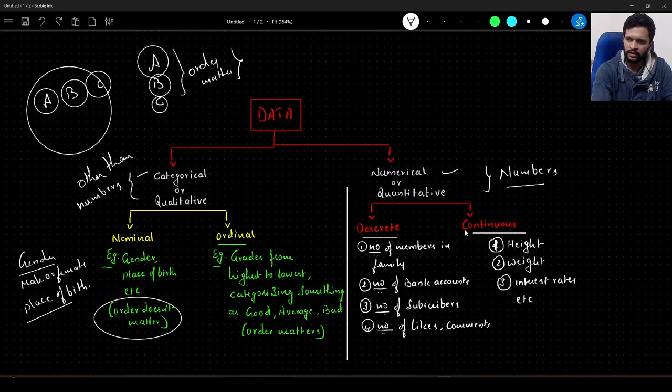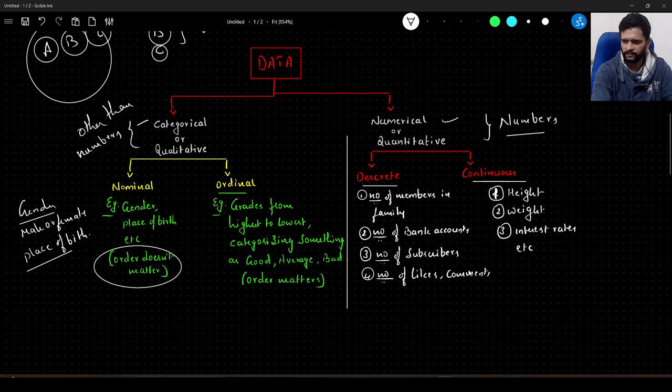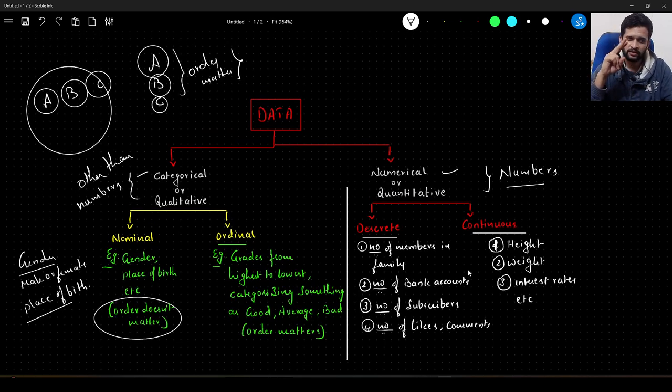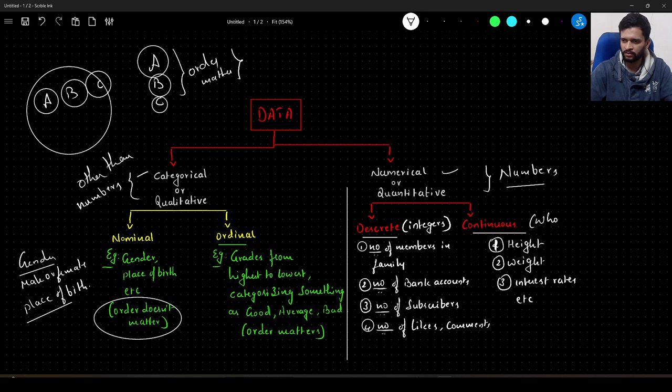Now we'll understand numerical data. Within numerical data, there are two subcategories: discrete and continuous. What are discrete numerical data? These are strictly integers. Discrete data will always be integers; they cannot be whole numbers or any other numbers other than integers.